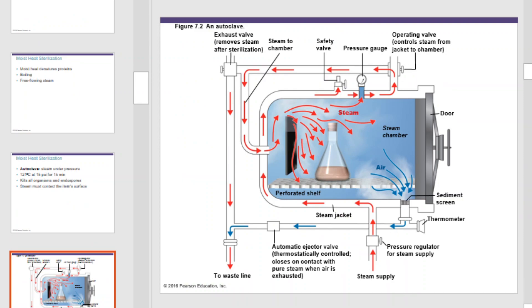The only way an autoclave is truly effective is if the steam can actually make contact with the microorganism. If you look at a flask inside the autoclave with a stopper, this would not be ideal — if the stopper prevents steam from entering the flask, microorganisms can survive. Furthermore, the pressure could actually explode the flask. Any time you put a flask in the autoclave with a stopper, it must be loosened.